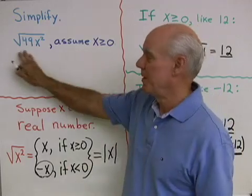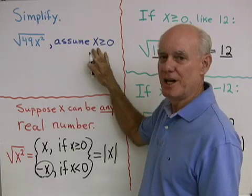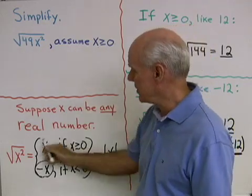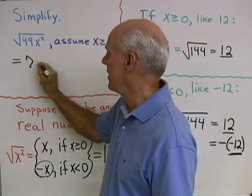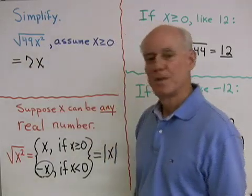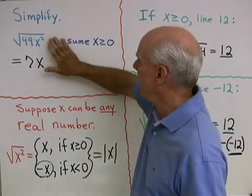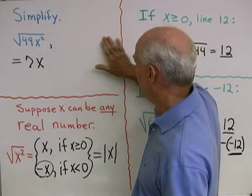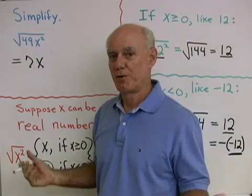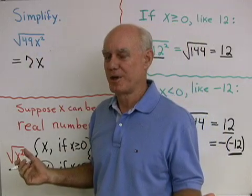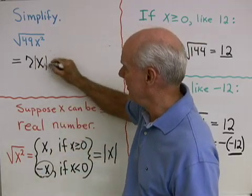So what does that have to do with this problem? In this problem, I want the square root of 49x², assuming that x is a positive number. So I'm in the x ≥ 0 category, which means my answer is simply going to be 7x. But if I erase that restriction and I don't know anything else about x, and you just ask for the square root of 49x², then the correct answer is 7 times the absolute value of x.